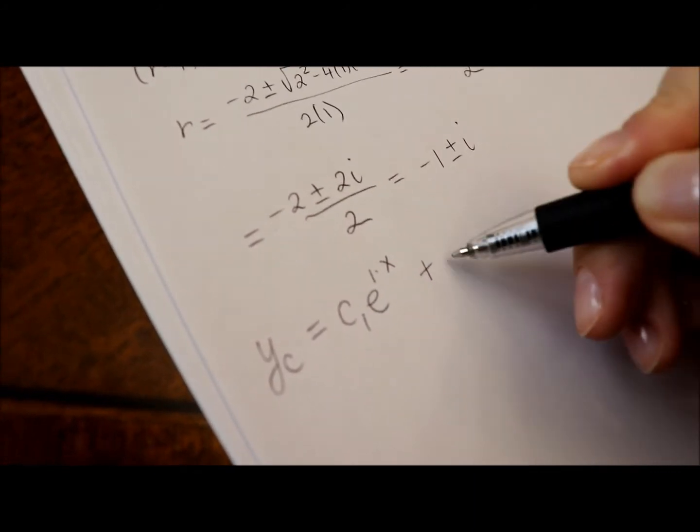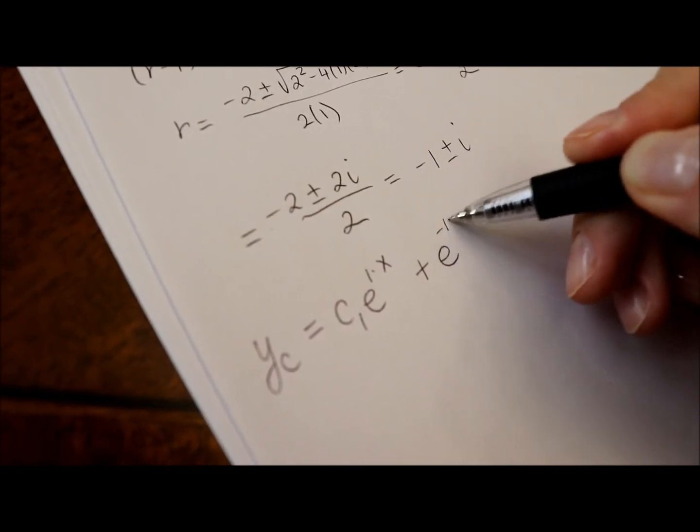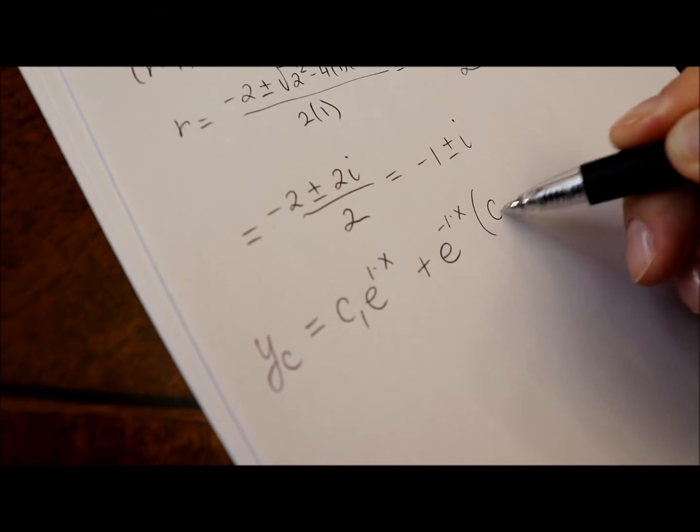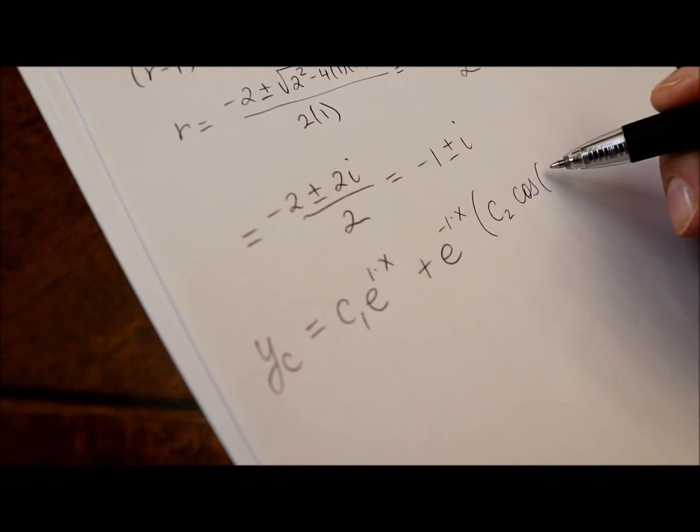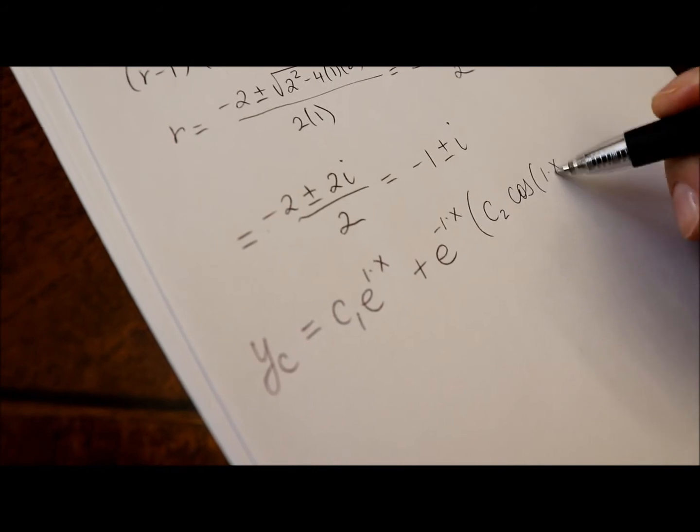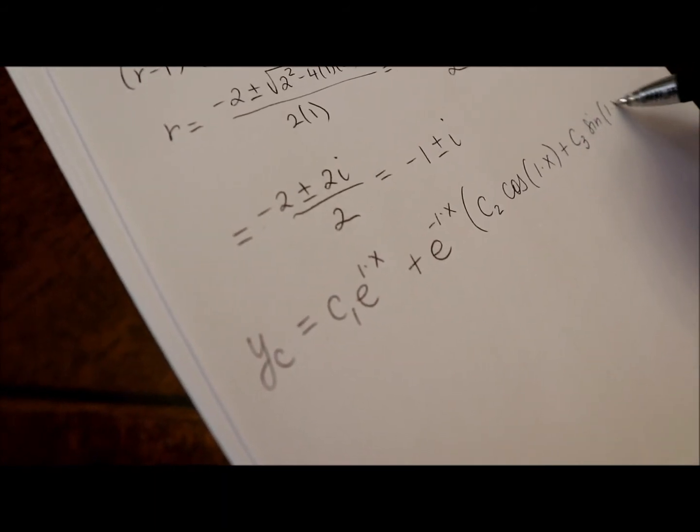plus e to the power real part of the imaginary solution, negative 1 times x, multiplied by c sub 2, cosine real part of the imaginary number, 1 times x, plus c sub 3, sine, 1 times x.